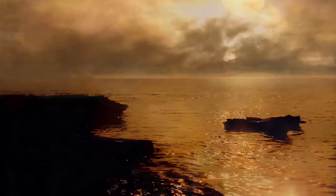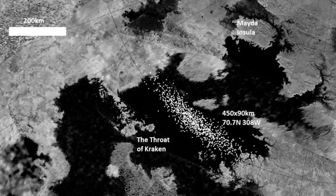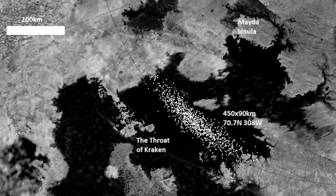Named after the legendary sea monster, Kraken Mare is split in two parts, with a strait connecting each side that's roughly the same size as the Strait of Gibraltar.